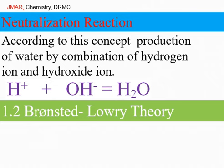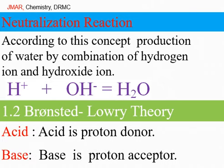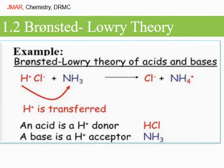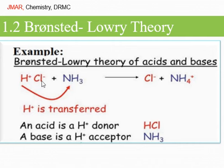Now we discuss the Brønsted-Lowry theory. Here, an acid is a proton donor and a base is a proton acceptor. Example: HCl + ammonia gives chloride ion and ammonium ion. Here, a hydrogen ion is transferred from HCl to ammonia, so HCl is the acid and ammonia is the base.